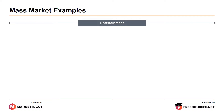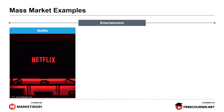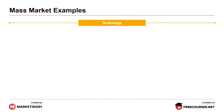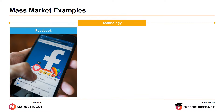Moving on to the entertainment category, brands such as Netflix, TikTok and Amazon Prime also cater to the mass audience with their diverse offerings in terms of movie genres, music and entertainment. One thing to note here is that there is no age bar when it comes to entertainment across the globe. Moving on to the technology aspect, Facebook, which owns brands like WhatsApp, Instagram and now Jiffy, caters to a mass audience. In fact, there are 2.6 billion users of Facebook around the globe, and a billion users of Instagram, making it a mass penetrative model.